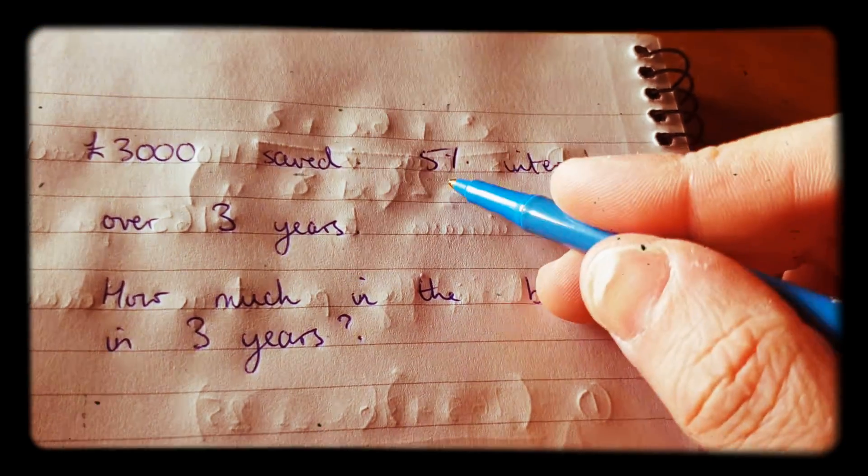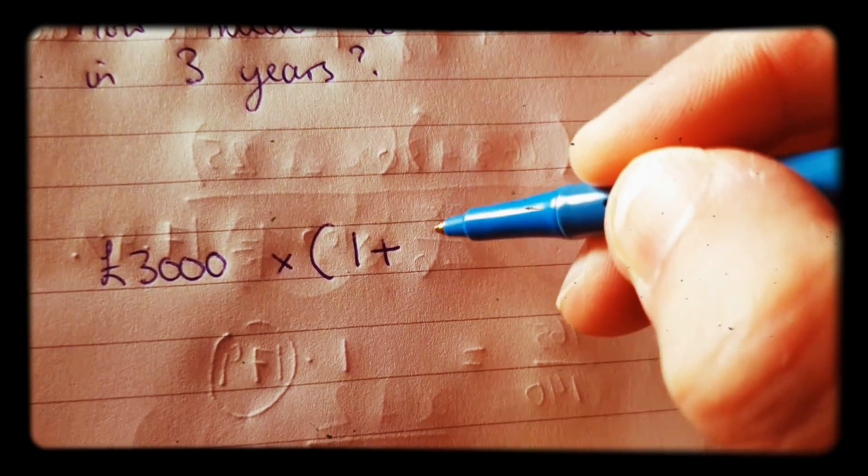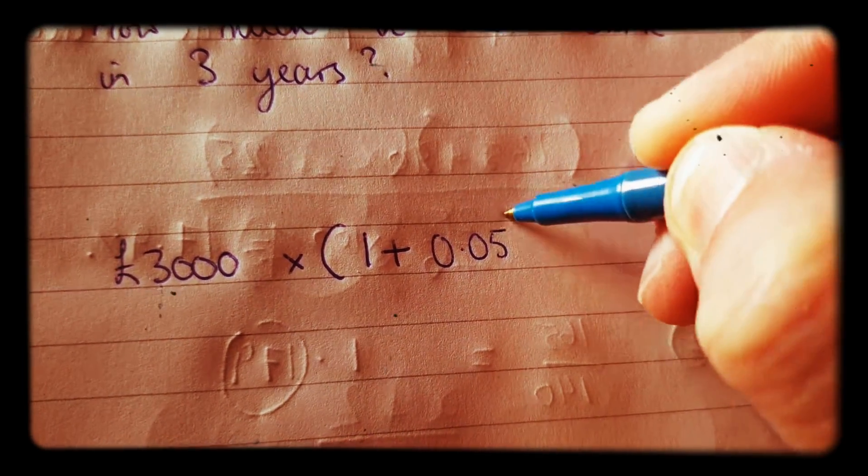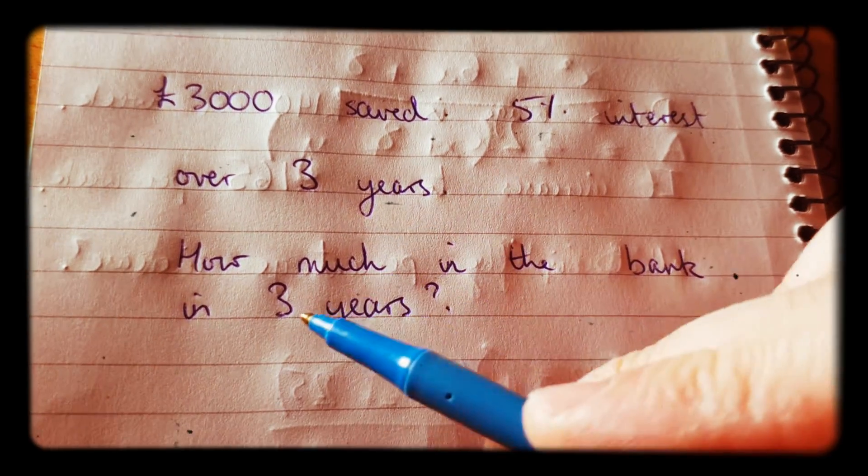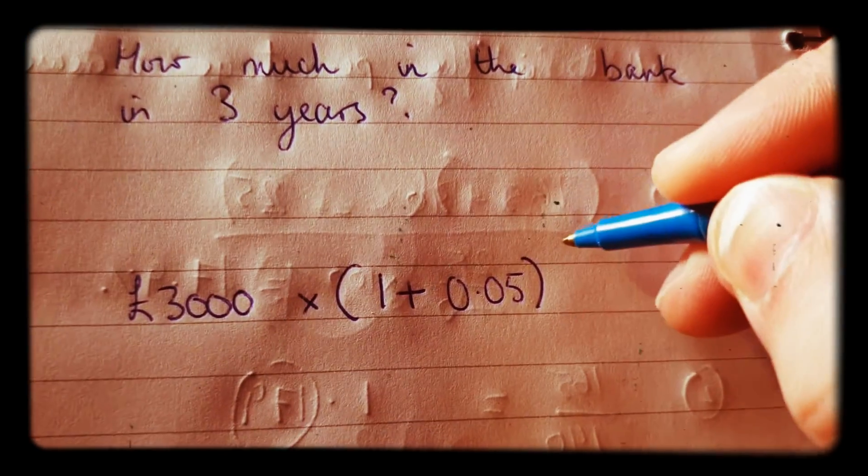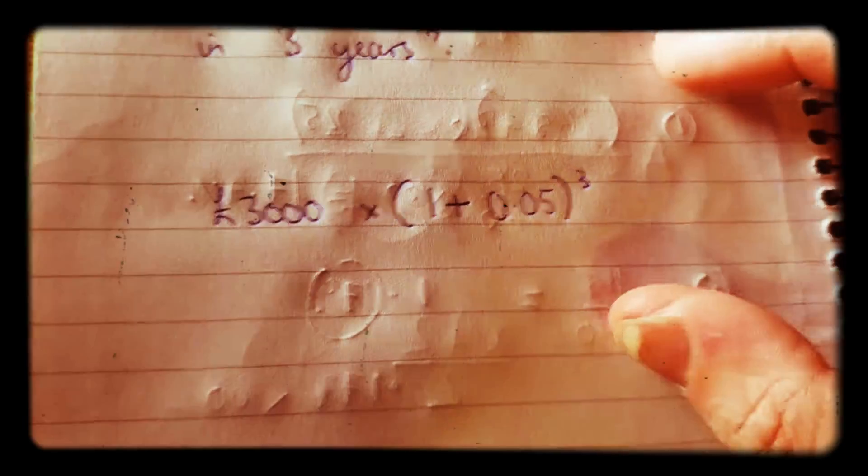5% as a decimal is 0.05. And you put that to the power of how many years there are, and that's three years.